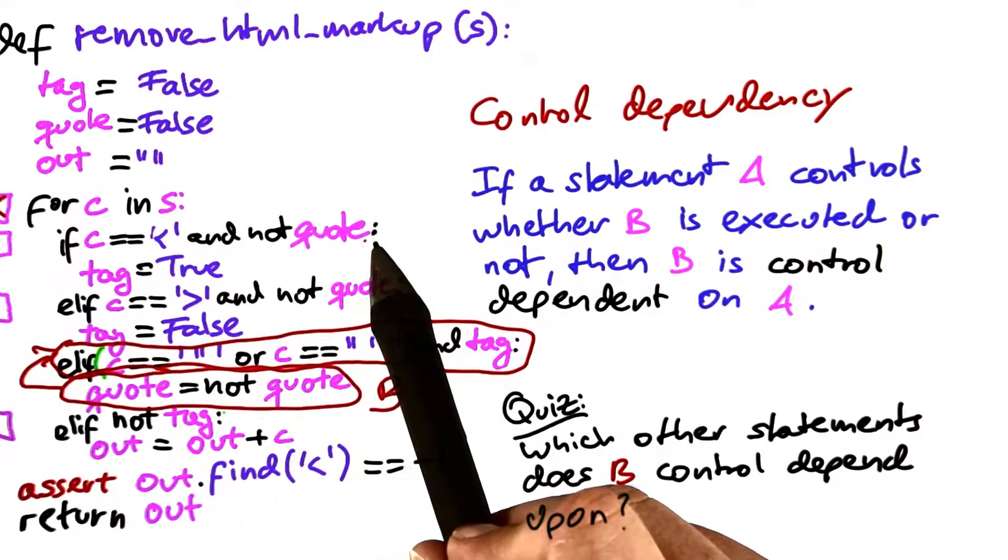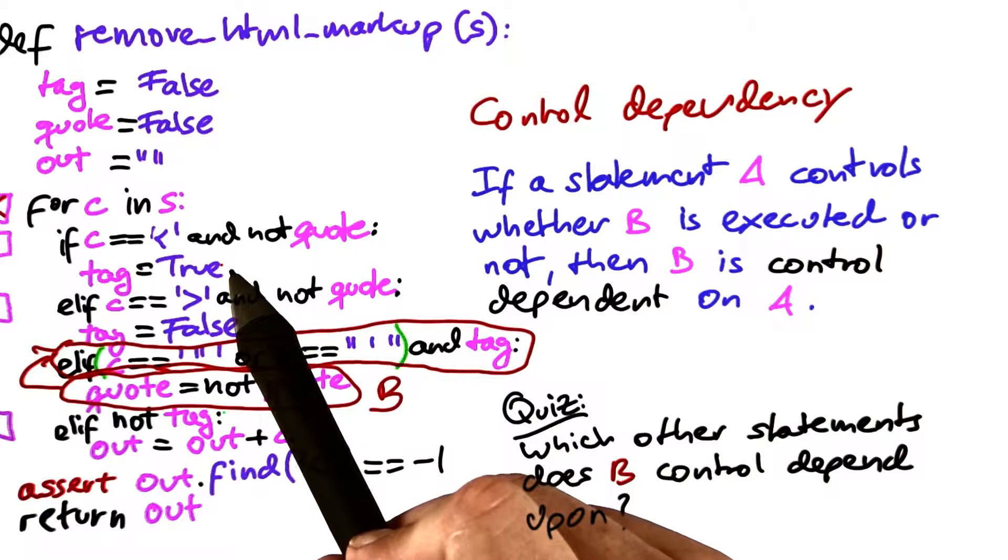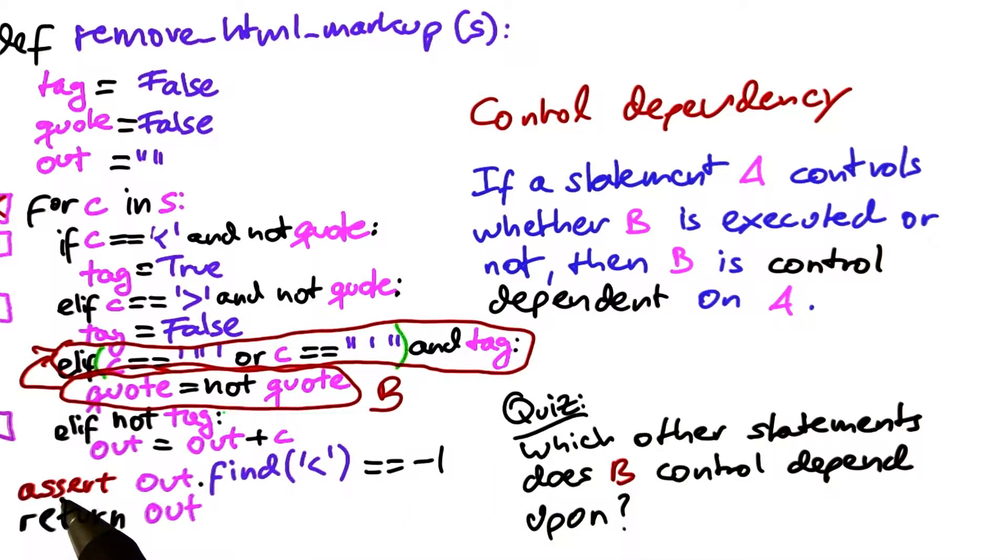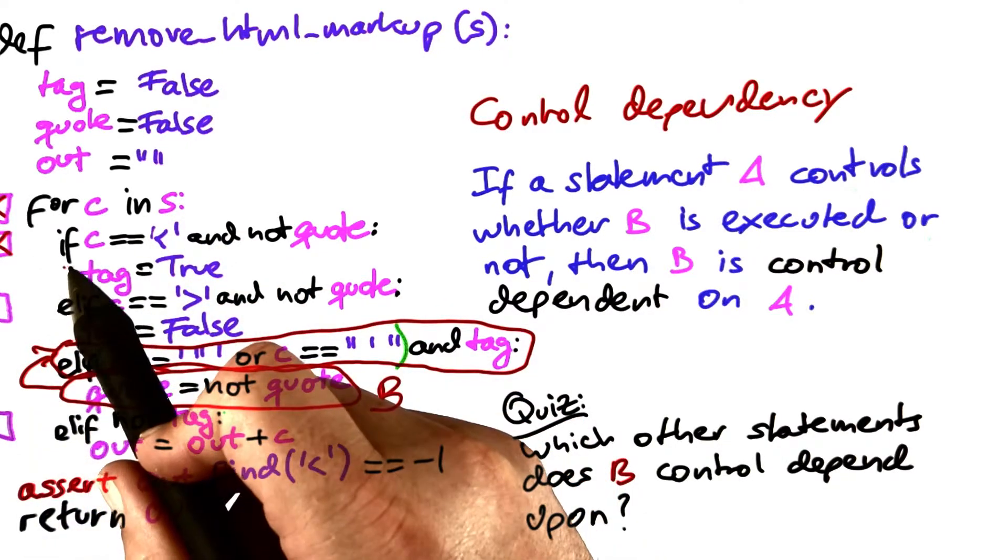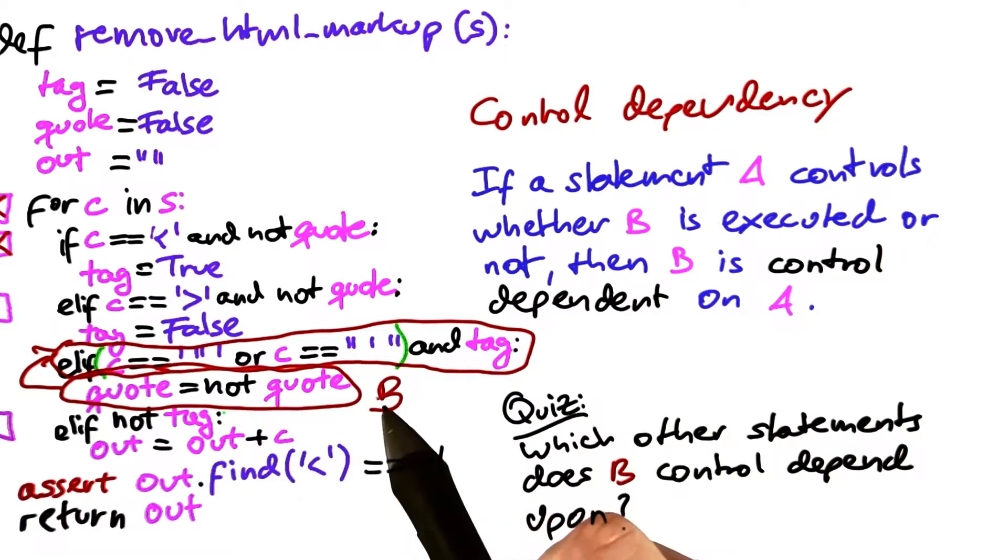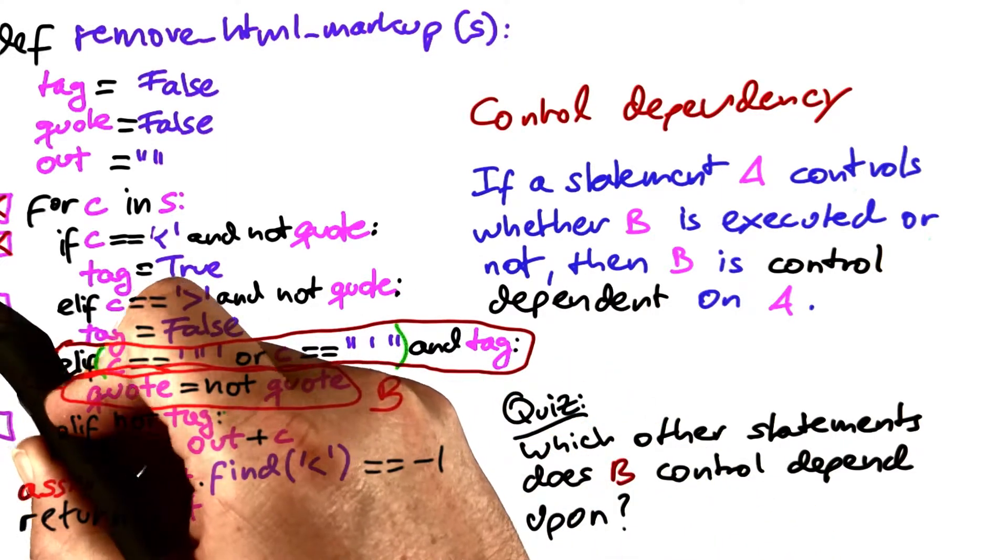If this condition holds, then tag is set to true. If it does not hold, execution resumes for the remaining conditions. And therefore, this if condition also controls whether this is executed. Same thing happens for the other condition.